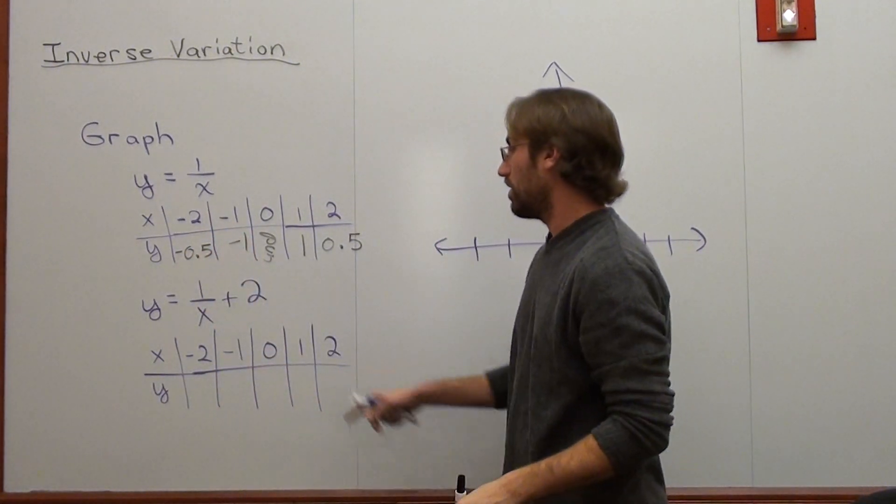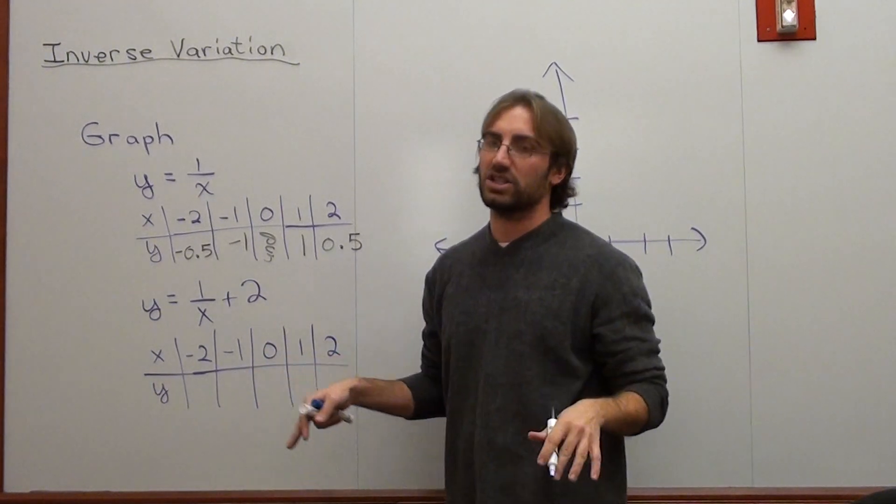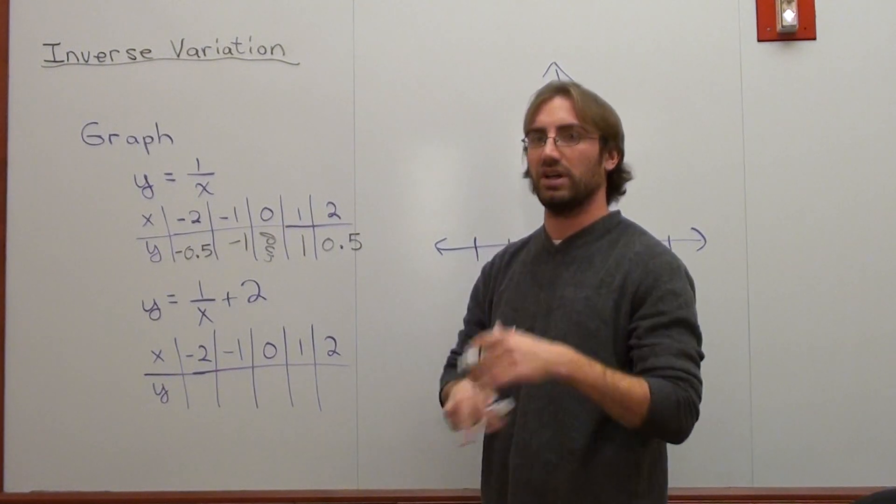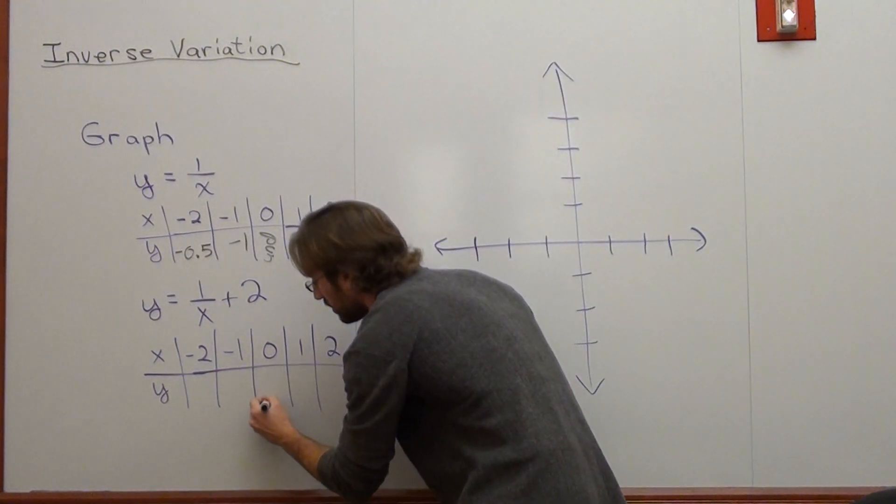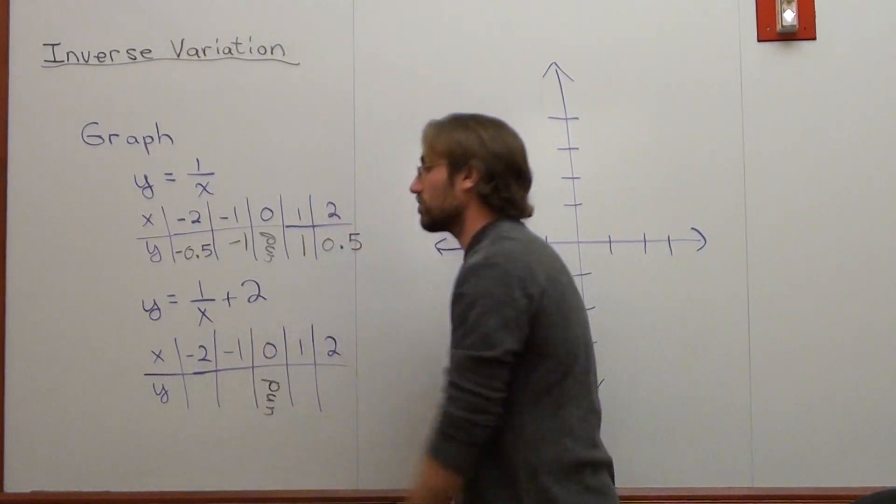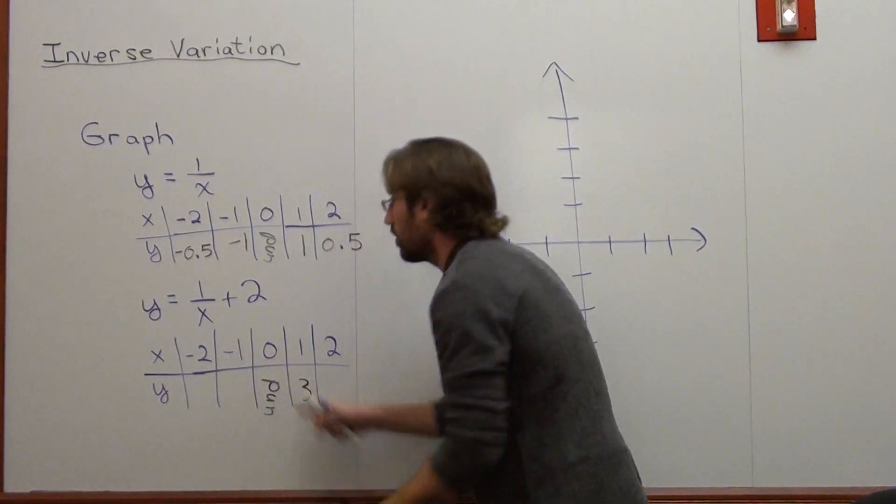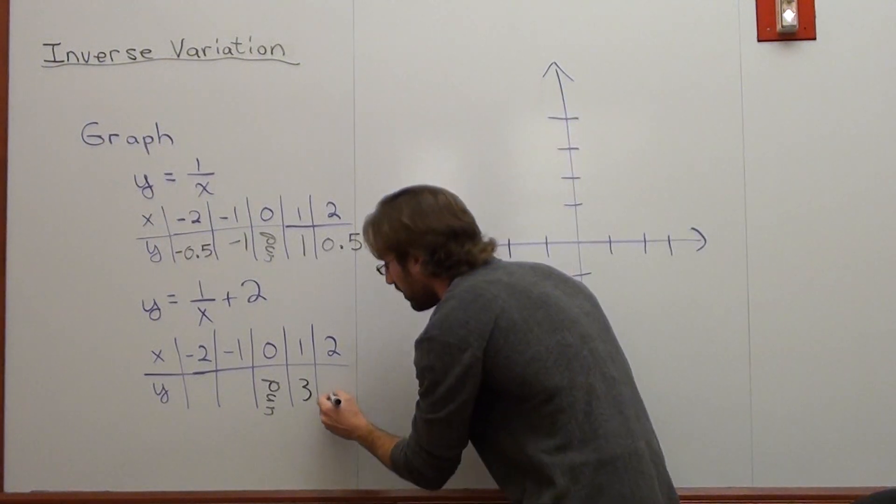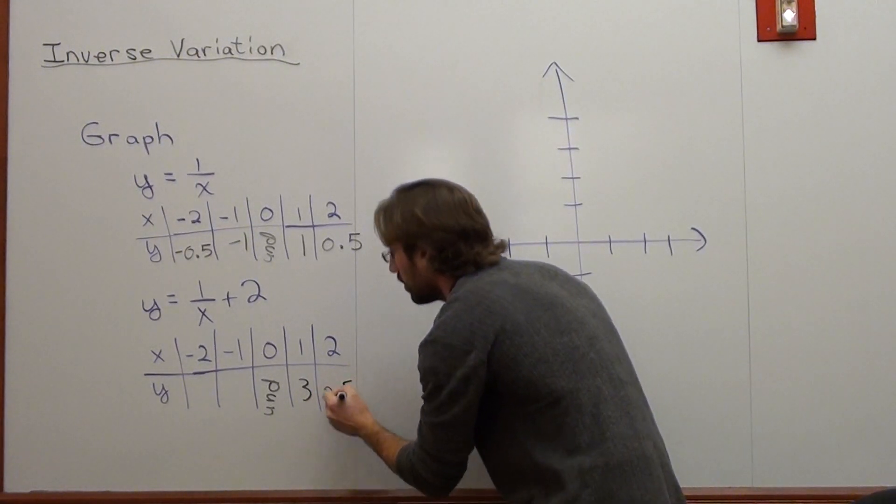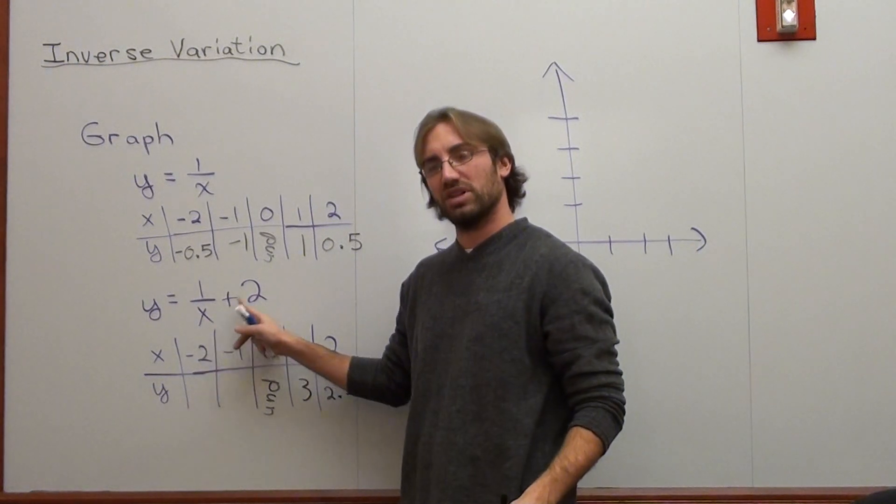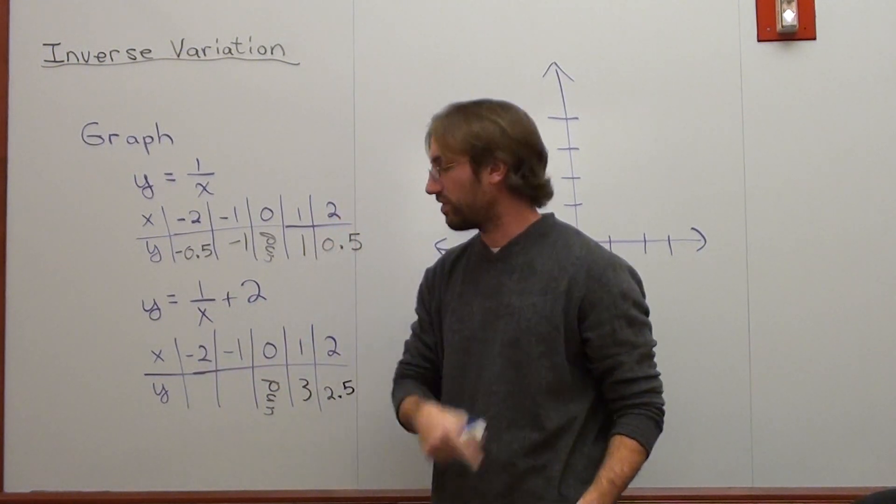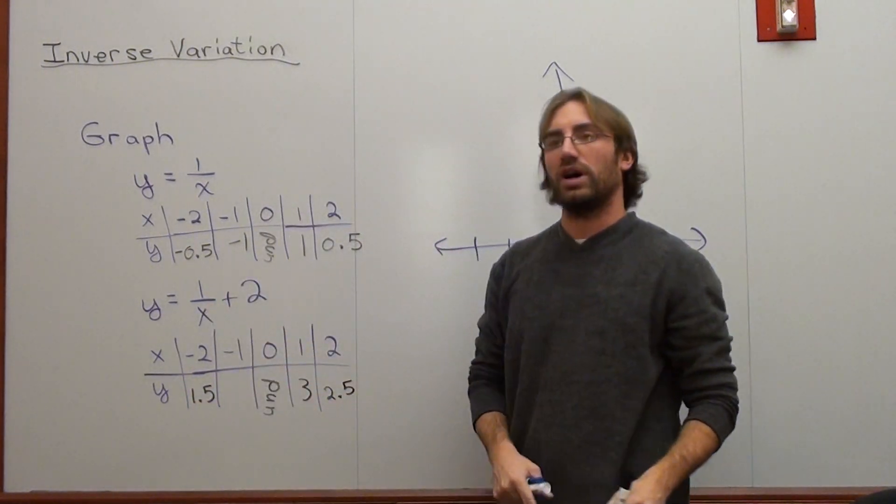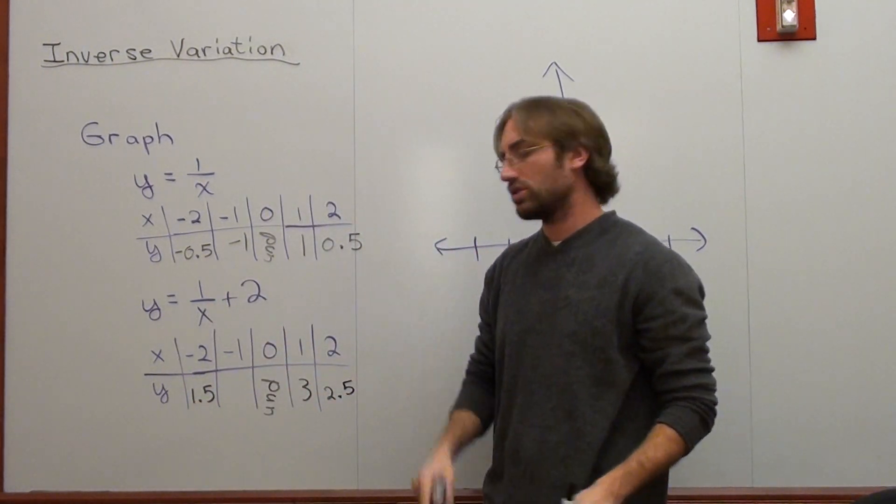When I do the same thing here, 1 over 0 automatically just makes it undefined no matter what. I'm not going to add 2 to it afterwards. 1 over 0, undefined. 1 over 1 is 1, but then you add 2, it's 3. 1 over 2 is 0.5 plus 2, which is 2.5. 1 over negative 2 is negative 0.5 plus 2, which is 1.5. And 1 over negative 1 is negative 1 plus 2, which is 1.